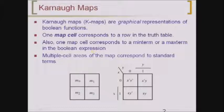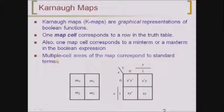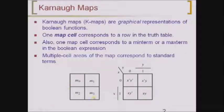If you are using a truth table then this cell is going to represent a row in the truth table, and if you are using an expression then this cell is going to represent either a minterm or a maxterm. Multiple cell areas of the map correspond to standard terms. If you are using multiple cells inside the map then it corresponds to a standard expression. This is the map we are going to use as a Karnaugh map, where we represent all the minterms like M0, M1, M2 and M3.